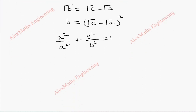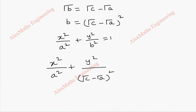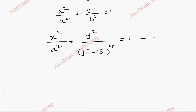Now, when we replace B here, x²/A² + y²/B² becomes — since B = (√C − √A)², the denominator B² becomes (√C − √A)⁴, so the equation is x²/A² + y²/(√C − √A)⁴ = 1. Let's keep this as equation (1) and differentiate with respect to A.